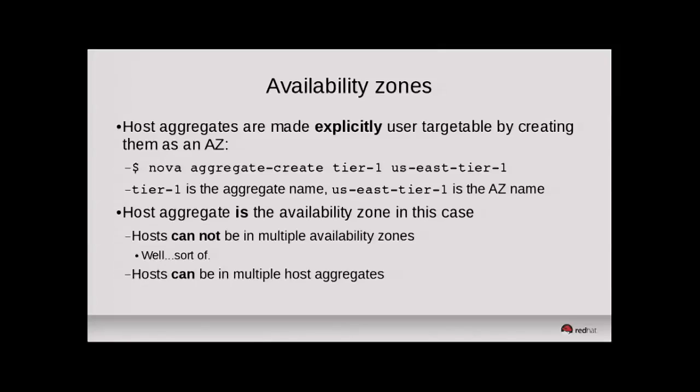Host aggregates are made explicitly user-targetable by exposing them as an availability zone — there's an additional entry on the host aggregate in the Nova database to illustrate that. When doing the aggregate create, you specify the availability zone name. The key difference is that the host aggregate is now exposed in the availability zone, meaning as an operator, hosts cannot be put in multiple availability zones in that same container. Since Grizzly, the intent has been to prevent hosts from being in multiple availability zones, making it fairly difficult to do so.